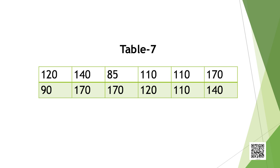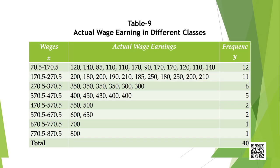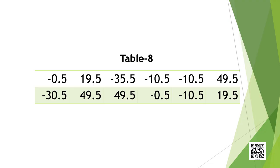Thus, the error of grouping in each case is shown in Table 7 on the screen. Now look at Table 9 on the screen. Here, the actual values, i.e., wage earnings in different classes, are given. We should note that the total error of grouping in any class will be small if the values are uniformly distributed within the class and the class interval is not too large. In that case, the positive and negative errors will tend to cancel out.